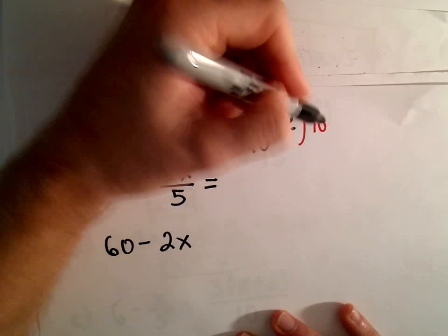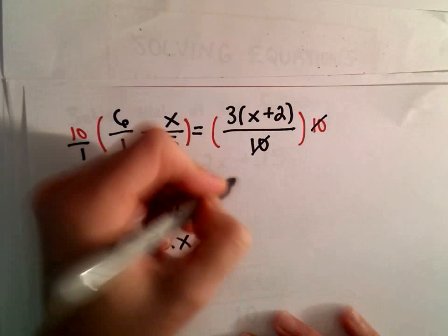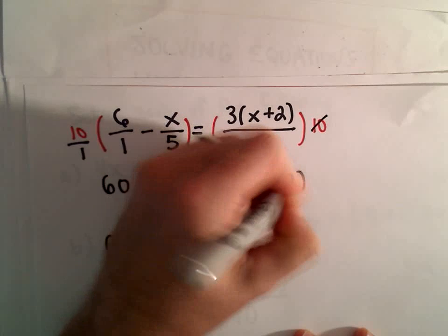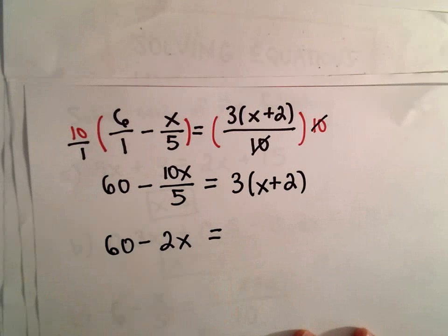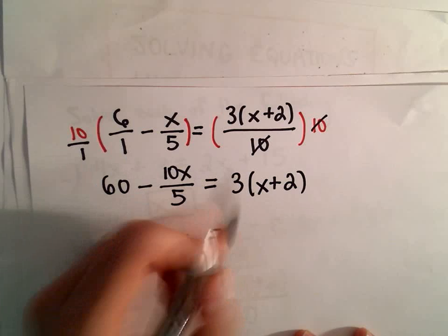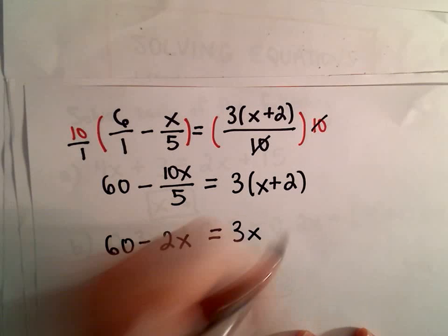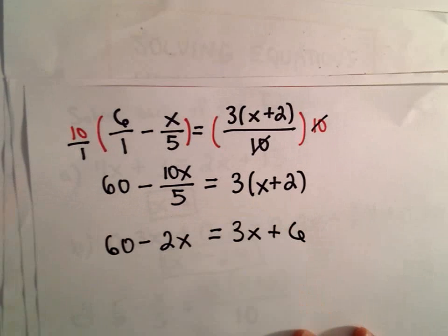On the right side, the tens will just cancel out, and we'll have 3 times the quantity x plus 2. I'm going to go ahead and distribute the 3. So, we'll have 3 times x, which is 3x, and 3 times 2 will be 6.